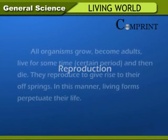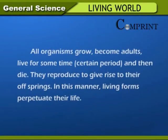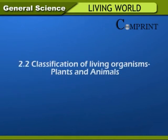Reproduction. All organisms grow, become adults, live for some time and then die. They reproduce to give rise to their offspring. In this manner, living forms perpetuate their life. Classification of living organisms includes plants and animals.